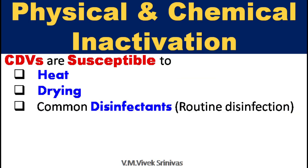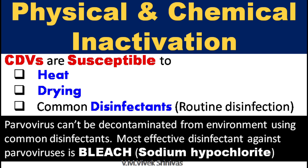Distemper virus cannot survive more than a few hours in the environment at room temperature. They are easily inactivated by heat, drying, and most common disinfectants, so routine disinfection is adequate to kill this virus. In contrast, parvovirus cannot be decontaminated from the environment using common disinfectants — the most effective disinfectant against parvovirus is bleach, that is sodium hypochlorite.